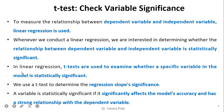Now let us start. To measure the relationship between dependent variable and independent variable, we use linear regression. Whenever we conduct a linear regression, we are interested in determining whether the relationship between the dependent variable and independent variable is statistically significant. T-tests are used to examine whether a specific variable in the model is statistically significant. We use a t-test to determine regression slope significance. A variable is statistically significant if it statistically affects the model accuracy and has a strong relation with the dependent variable.